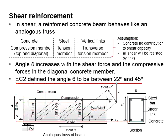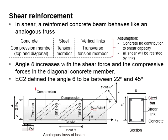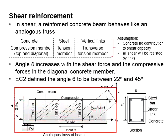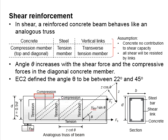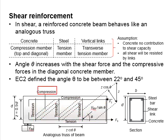This figure shows a typical analogous truss in the reinforced concrete beam. The beam behaves as a truss, with the top part undergoing compression, the bottom part undergoing tension, the vertical part undergoing tension, while the diagonal part undergoes compression. The compressions are taken by the concrete, the bottom tension is taken by the tensile steel, while the vertical tension is taken by the shear link.